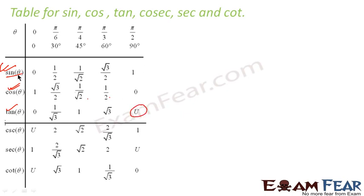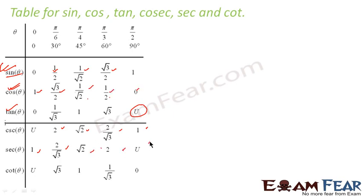Tan 90° is undefined because tan is sin divided by cos, and 1 divided by 0 is undefined. Similarly, cosec is the opposite of sin: cosec 0° is undefined (1/0), cosec 30° is 2 (1 divided by 1/2), cosec 45° is √2, cosec 60° is 2/√3, cosec 90° is 1. Sec is 1 divided by cos: sec 0° is 1, sec 30° is 2/√3, sec 45° is √2, sec 60° is 2, sec 90° is undefined. And cot is 1 divided by tan: cot 0° is undefined, cot 30° is √3, cot 45° is 1, cot 60° is 1/√3, cot 90° is 0.